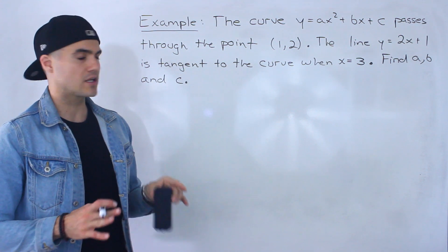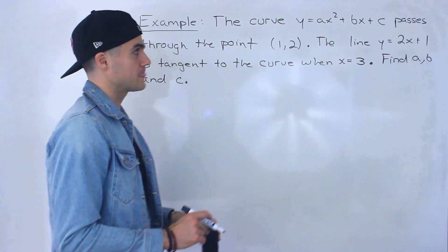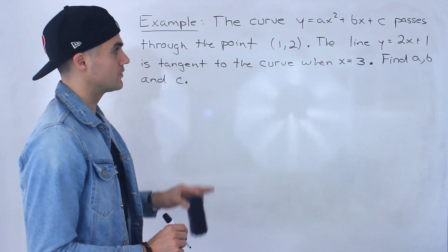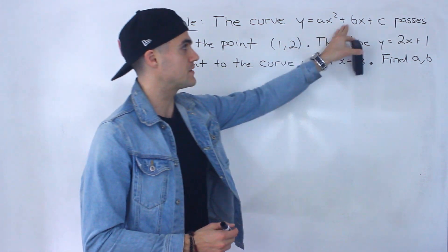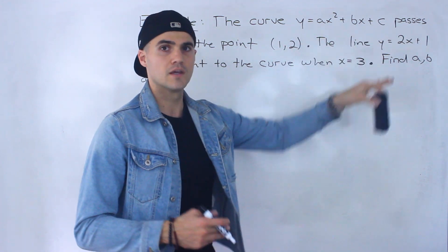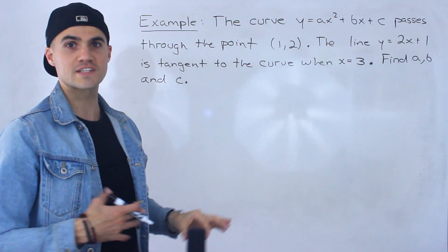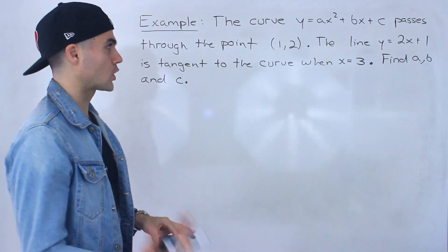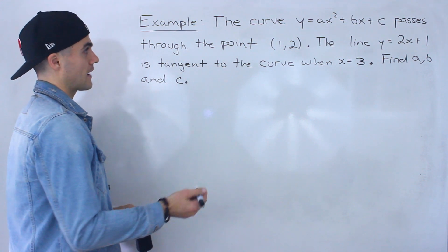So this one's a little bit tricky — there's going to be some extra algebra in this one. Notice that we have three unknowns: a, b, and c. So what we want to try to aim for is getting three equations. How can we do that?